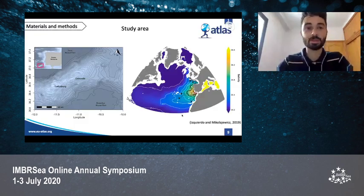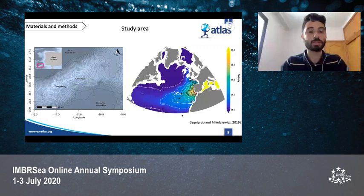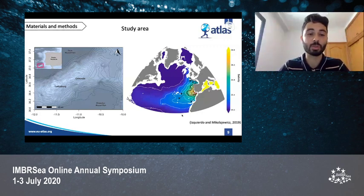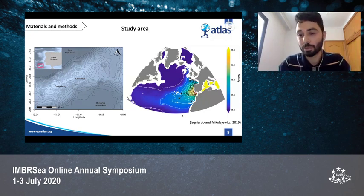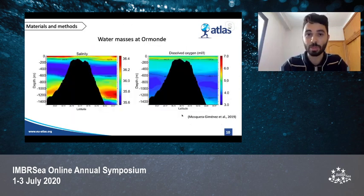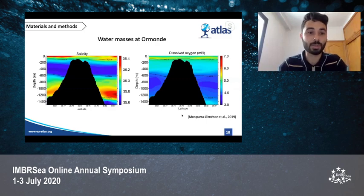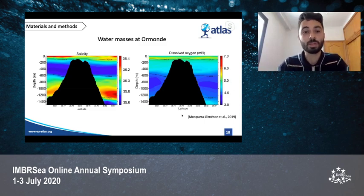The study location is on the Gorringe Bank, which has two peaks: Gettysburg and Ormonde. The Gorringe Bank is located 190 kilometers southwest of the coast of Portugal and is at the pathway of the Mediterranean outflow water, forming the salty tongue visible on the right. The main water masses influencing Ormonde are the North Atlantic Central Water down to around 600 meters, then the Mediterranean Outflow Water (MOW) down to 1,250 meters, and below that the North Atlantic Deep Water.